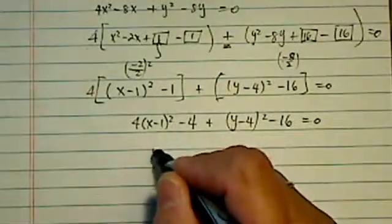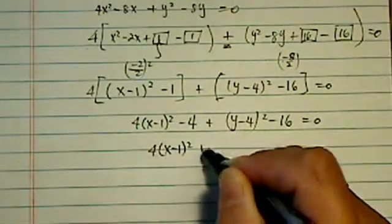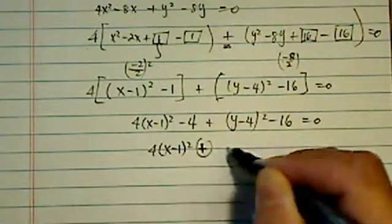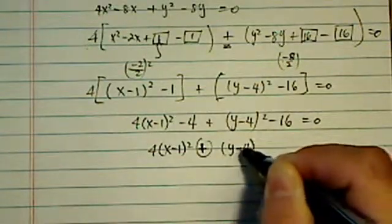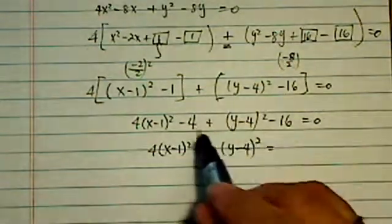Okay, almost there. 4(x - 1)² minus 4 plus (y - 4)² minus 16 equal to 0. Okay, let's gather our terms. 4(x - 1)² plus—this is the, like I said earlier in part 1, this is the smart term. Minus, minus.